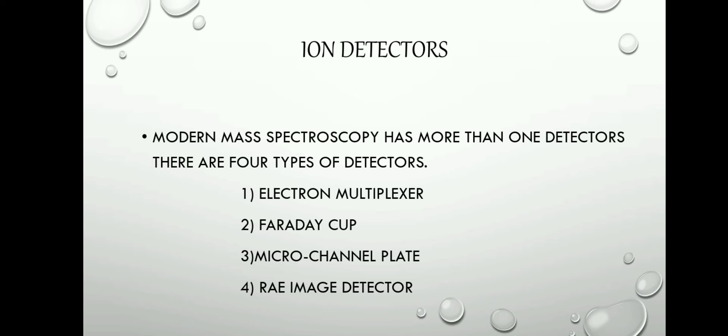About the ion detector: modern mass spectroscopy has more than one detector. There are four types of detectors: electron multiplexer, Faraday cup, microchannel plate, and rare image detector.